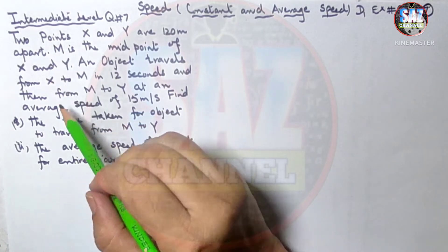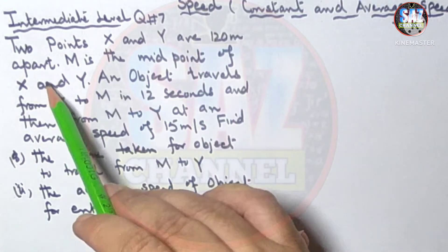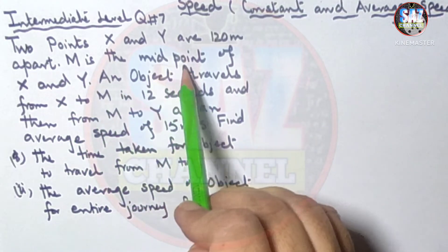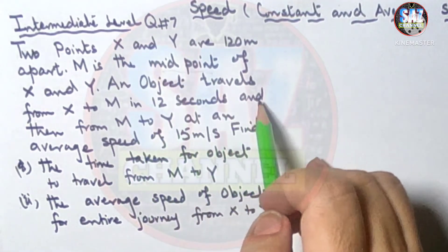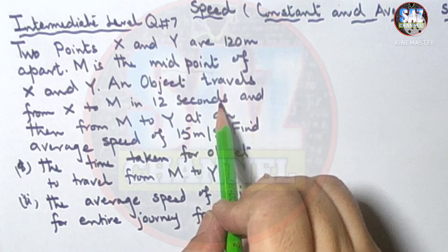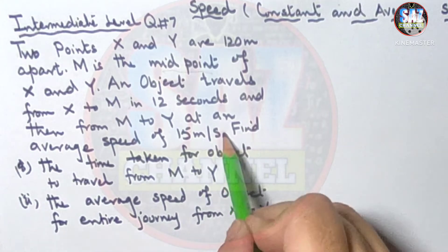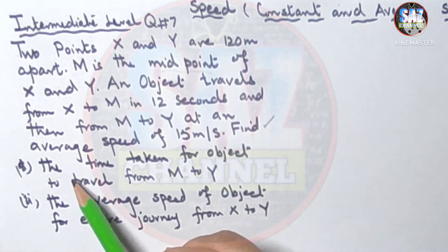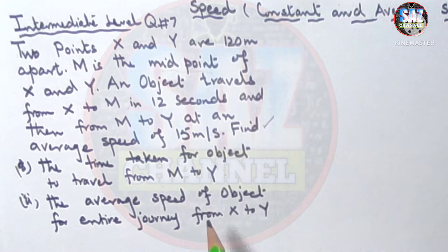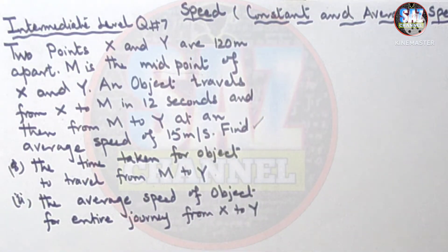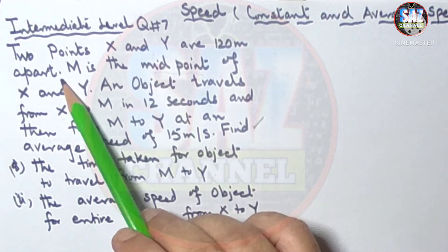Question number 7 says: two points X and Y are 120 meters apart. M is the midpoint of X and Y. An object travels from X to M in 12 seconds, and from M to Y at an average speed of 15 meters per second. Find the time taken for the object to travel from M to Y, and the average speed of the object for the entire journey.